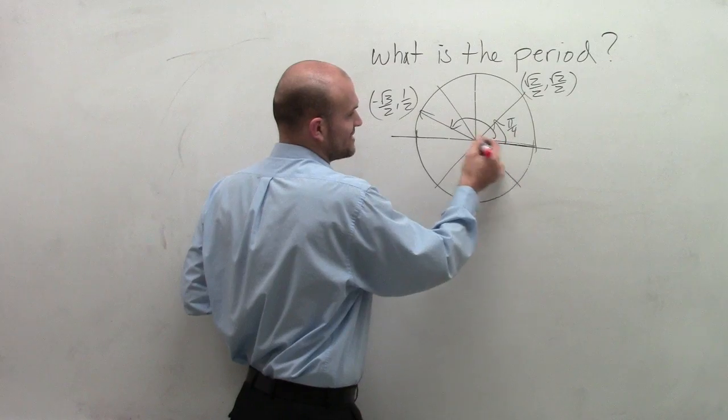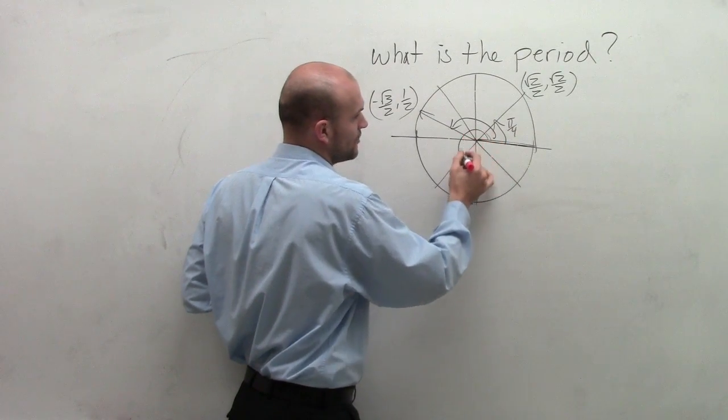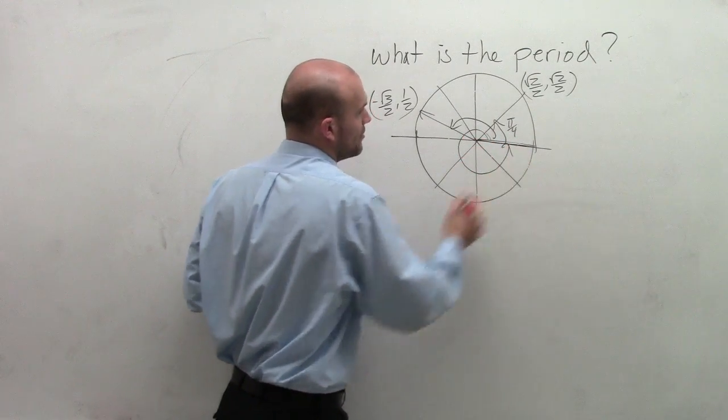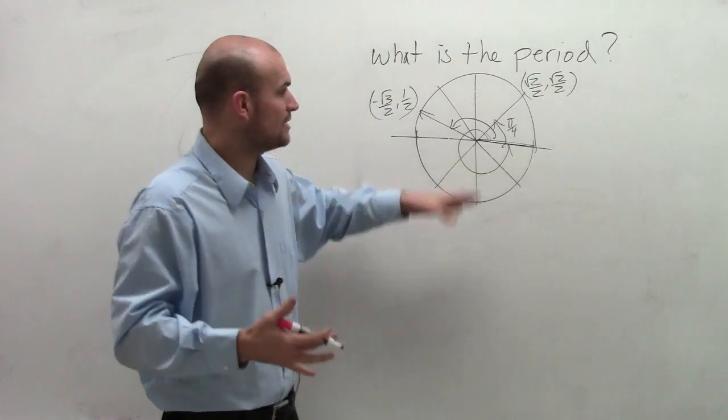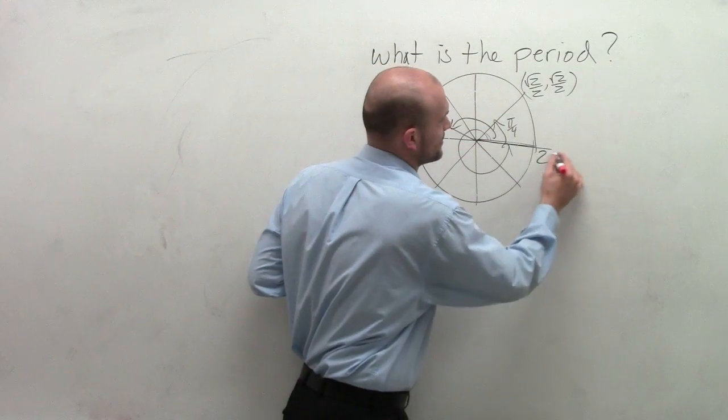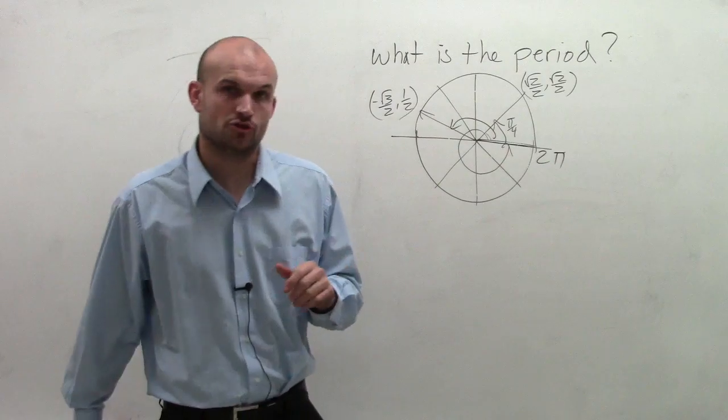But what we notice is as this graph, as we keep on going all the way around, remember this is cyclical, right? Our angles are cyclical. So once we get around, we call that distance of an angle 2 pi.